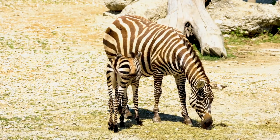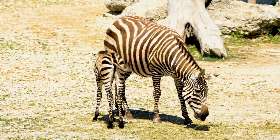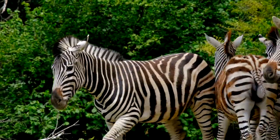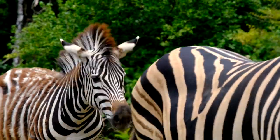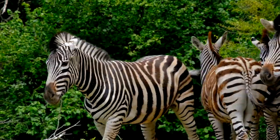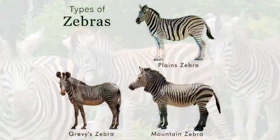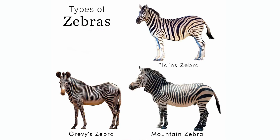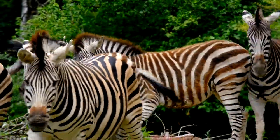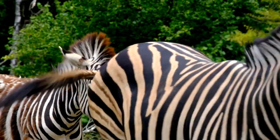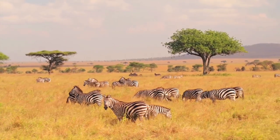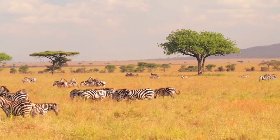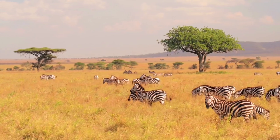The zebra resembles a horse except for its short tufted mane and unique stripes. Each zebra species has its own general stripe pattern, but each individual zebra has a unique pattern much like a person's fingerprints. Scientists theorize the stripes can serve as camouflage, sunscreen, or a barrier. The plains zebra is the most common of the three species. One of the best locations to see it is Tanzania's Serengeti National Park. Plains zebras prefer to live in small groups — a stallion, a few mares, and their young — that rarely band together into large herds.